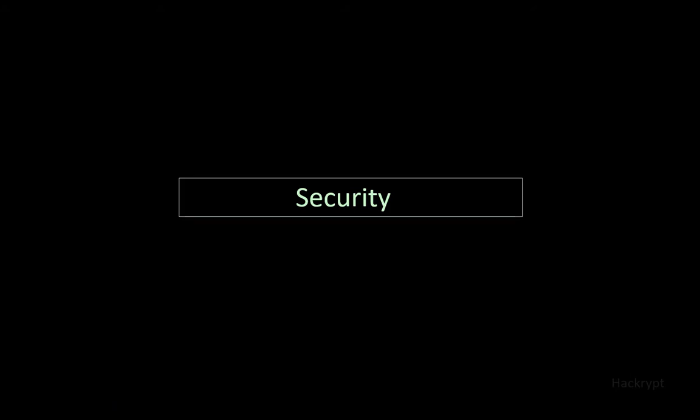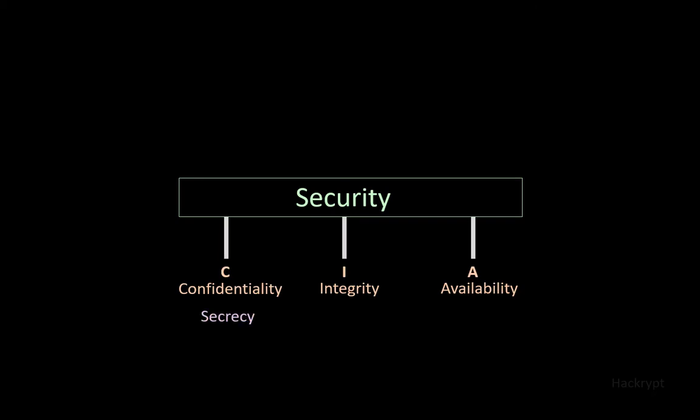The three fundamental principles, or the three pillars on which security stands, is CIA: confidentiality, integrity, and availability. Confidentiality is to maintain the secrecy of data. Integrity provides accuracy and reliability. Availability is to make sure that the resource is accessible when it is required.